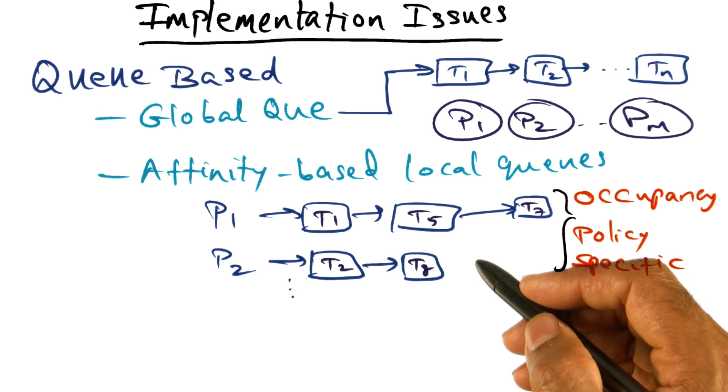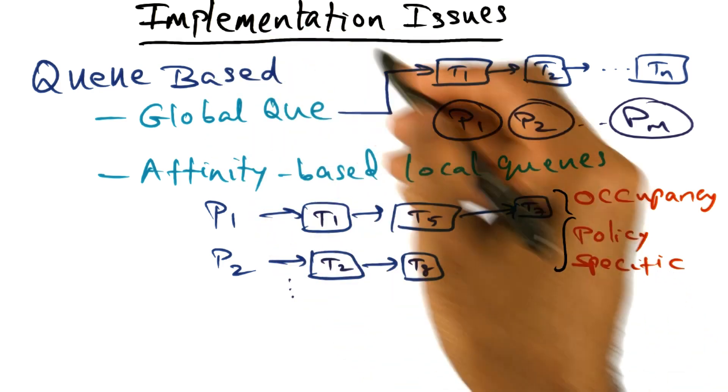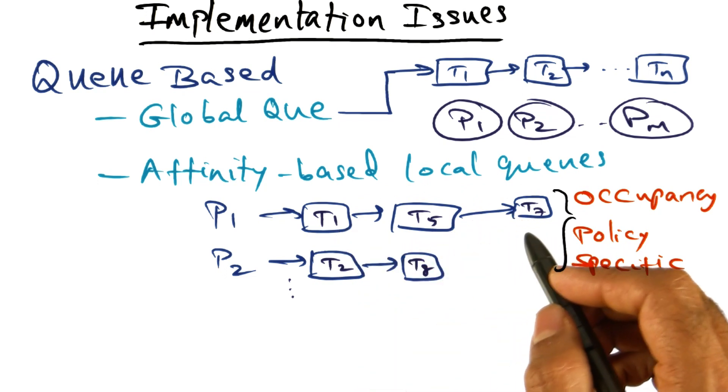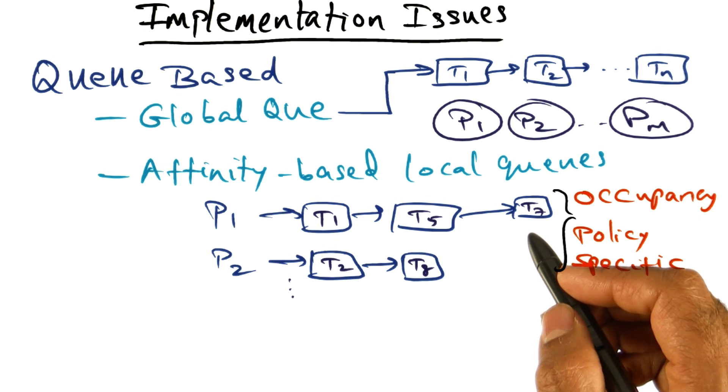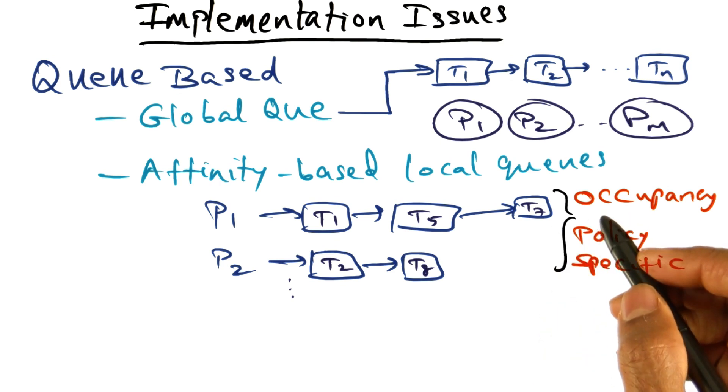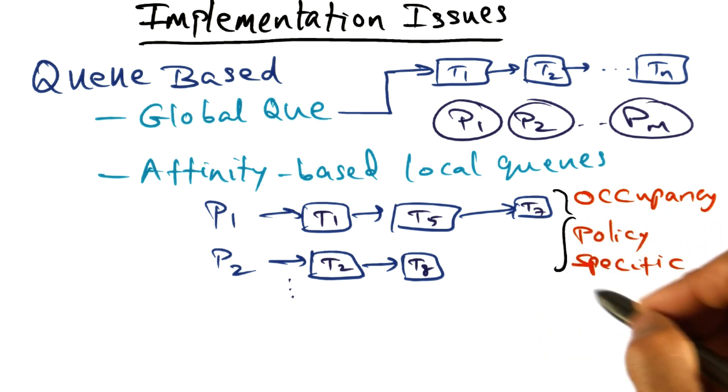But the important point I want to get across is that in implementing the scheduling policies, you have to have a ready queue of threads from which the processor will pick the next piece of work to do. And the organization of these queues will be based on the specific scheduling policy that you might choose to employ for the scheduler.